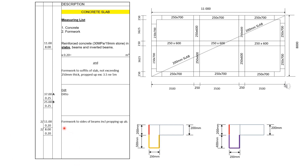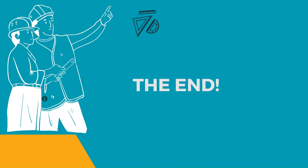Now moving on to formwork to the sides of the beams. This is just for the purpose of simplifying our takeoff process. We measure formwork to the sides of beams, including propping up as before. We take the full length of 11 meters multiplied by 2, multiplied by 0.2, which is the thickness of the slab or the remaining part of our beams. And then for the vertical lengths, it's 8 by 0.2, multiplied by 2. And just like that, we have reached the end of our exercise.